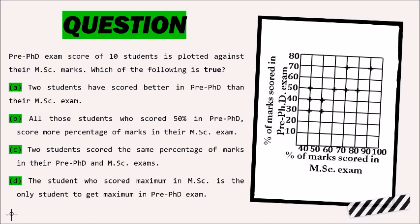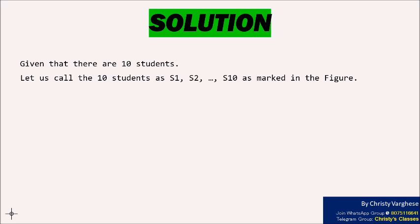Option C: Two students scored the same percentage of marks in their pre-PhD and MSc exams. Option D: The student who scored maximum in MSc is the only student to get maximum in pre-PhD exam.